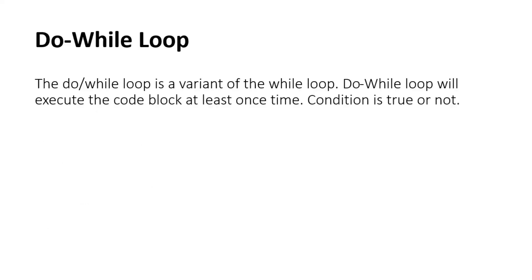This is our do-while loop. Do-while loop is a variety of the while loop, but the difference is that the do-while loop will execute code at least one time even if our condition is false. If the while loop condition is false it will terminate, but the do-while loop will execute at least one time regardless of whether the condition is true or not.